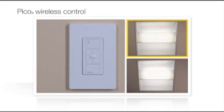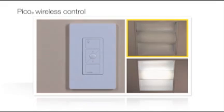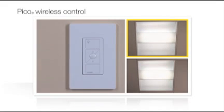To adjust grouping for a Pico wireless control, first press and hold the OFF button on the Pico you want to group for 6 seconds. A single fixture will begin to flash. If that fixture should not be controlled by the Pico you're working with, tap ON to remove it from the group. That fixture will then go to 25% brightness, indicating that it is no longer part of the group for that Pico.